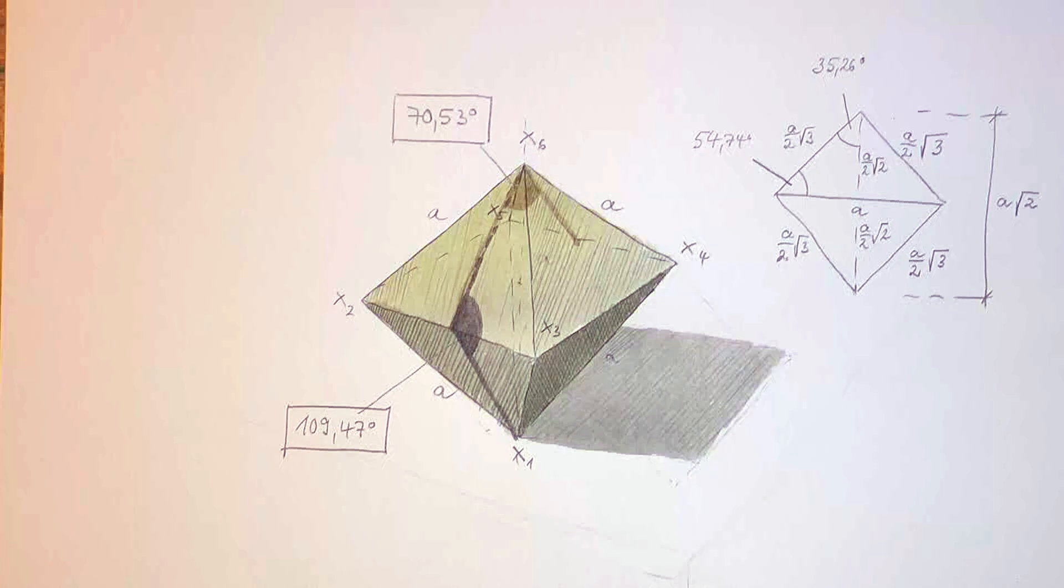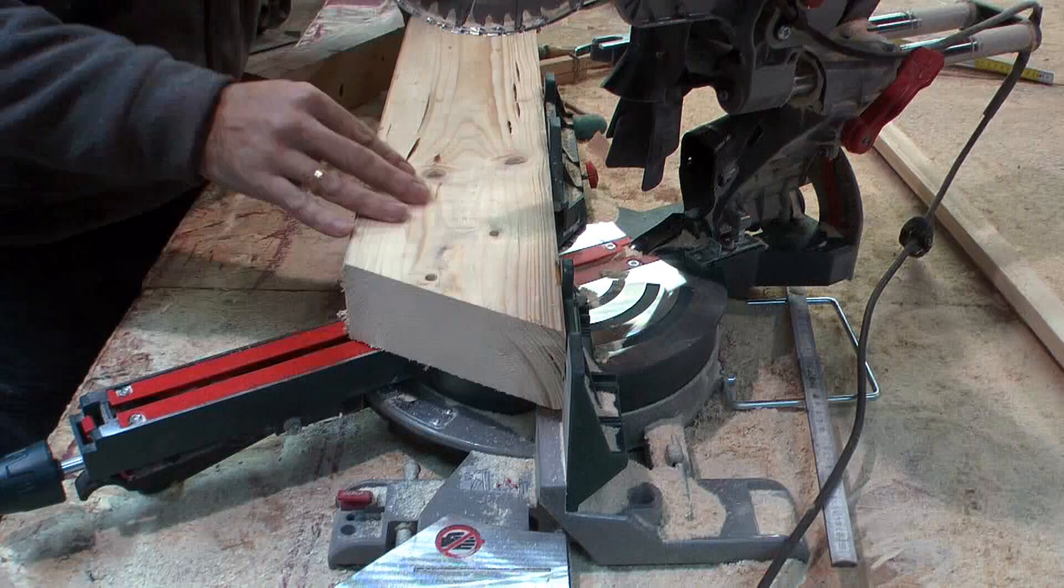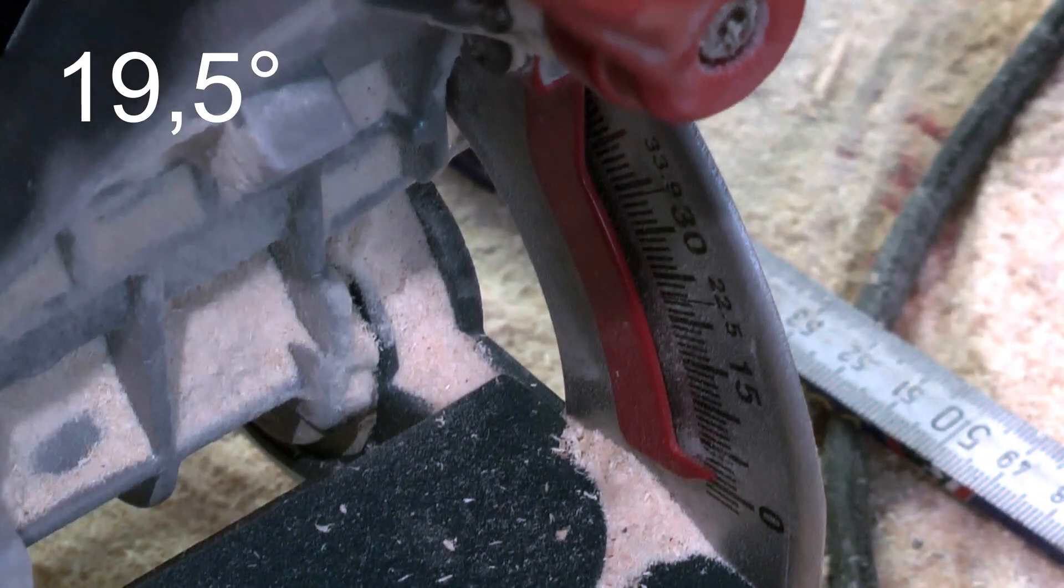And it's good to know that there is a 70.5 degrees angle. Reminds us of the tetrahedron, doesn't it? Starting with a triangle again, because it worked so well for the cube.